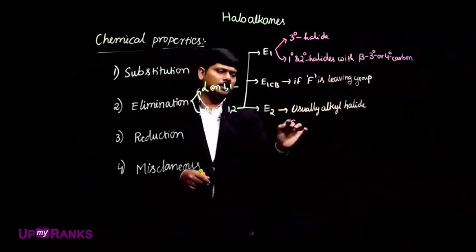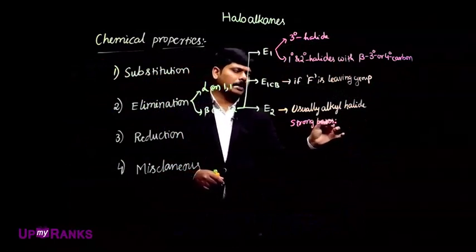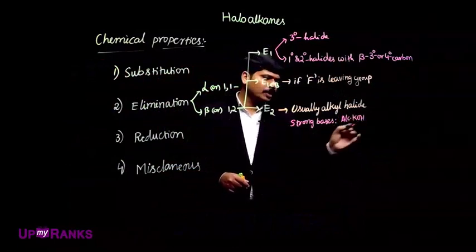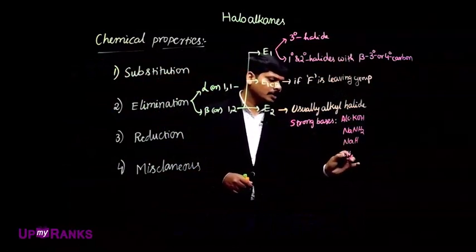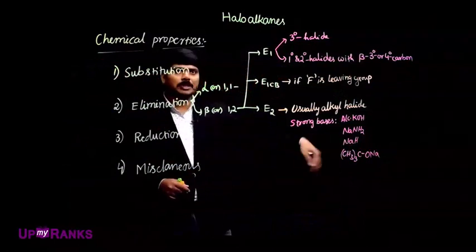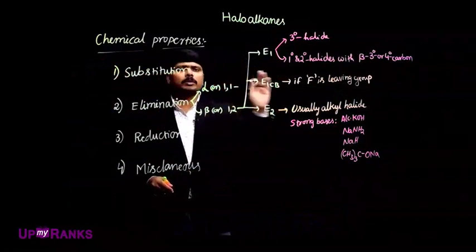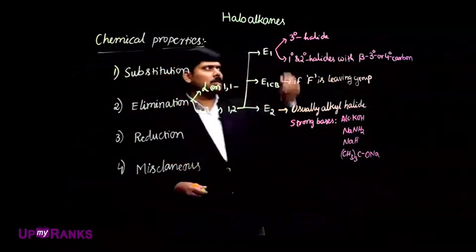E2 elimination is favored by strong bases. The strong bases include alcoholic KOH, NaH, NaNH2, sodium tertiary butoxide. In the presence of these strong bases, alkyl halides will usually undergo E2 elimination only.